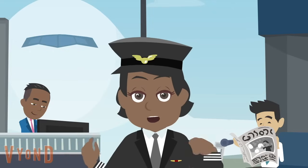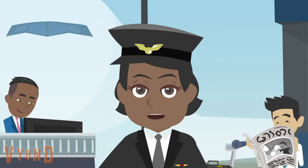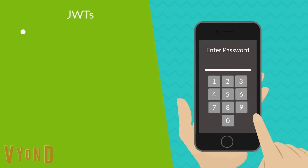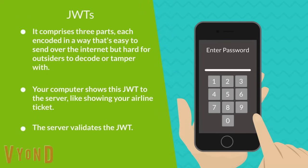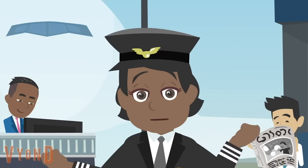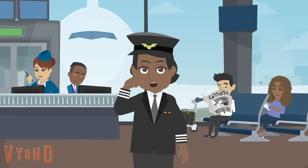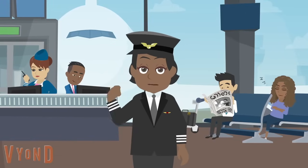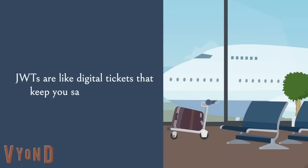JWTs are incredibly important for online security. They help prevent unauthorized access and protect sensitive data. A JWT is a small piece of coded information that a server gives to your computer when you log into a website or use an online service. When you want to access a secured part of a website, your computer shows this JWT to the server, like showing your ticket. The server checks it, and if everything looks good, it lets you access the service or data you requested. Companies like Apple, Google, Microsoft, and Amazon widely use them. So, a JWT is a secure and efficient way for websites and online services to verify your identity and permissions without constantly asking you to log in again.